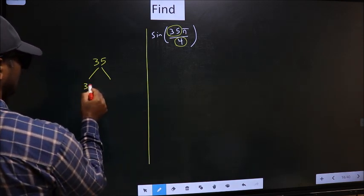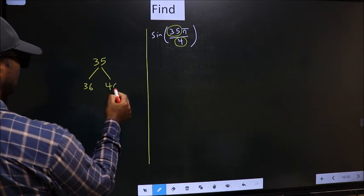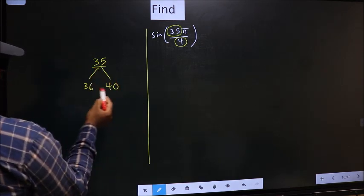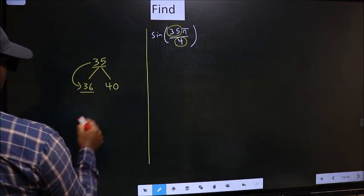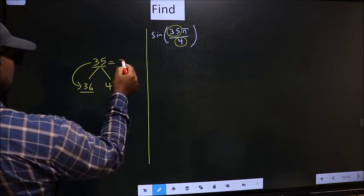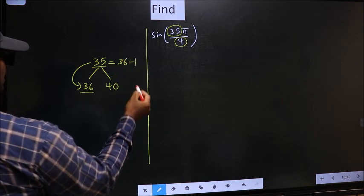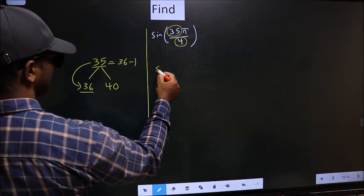That is 36 and 40. Now 35 is close to which multiple? This is close to 36. So 35 should be written as 36 minus 1. So this will change to sin.